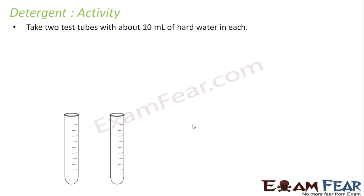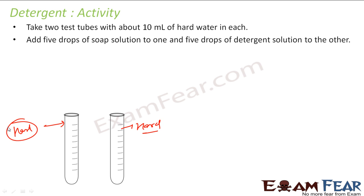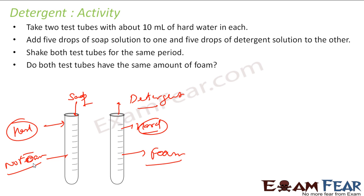For detergent, we can do one more activity. We have two test tubes and in both we put hard water. If you don't have hard water, you can put normal water and add magnesium and calcium ions. In one test tube we put soap, and in the other we put detergent. When we shake both, you will find that the detergent test tube gets foam and the soap test tube gets no foam or very less foam. That is the activity you can do.